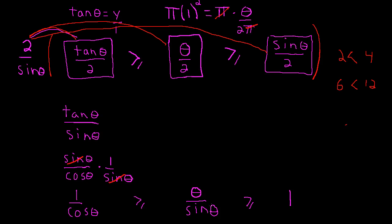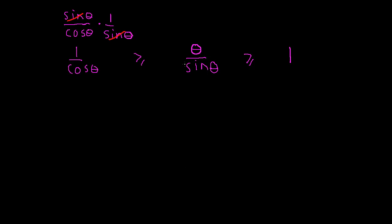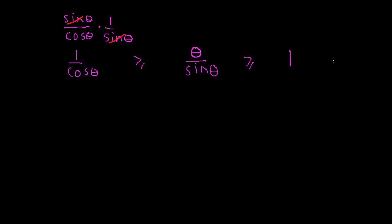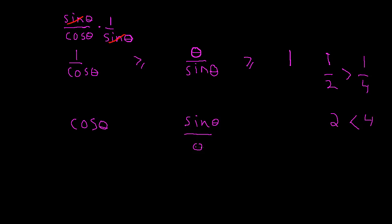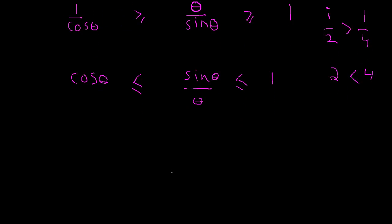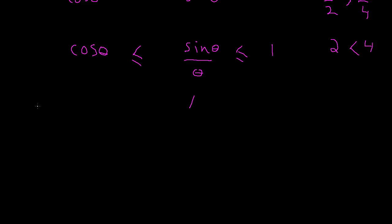Life would be really good if that were flipped. If I flip everything, the relationships change — just like flipping 1/2 and 1/4 gives 2 and 4, reversing which is larger. So flipping everything: cosine of theta is less than or equal to sine of theta over theta, which is less than or equal to 1. There it is — sine of theta over theta is sandwiched between these two functions by construction.